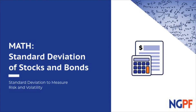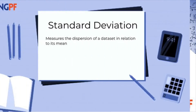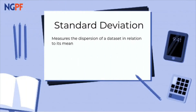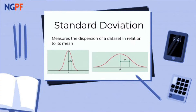It's useful to understand standard deviation because it provides us with a measurement of dispersion, or spread, of a data set in relation to its mean. Low standard deviation means that the data is clustered around the mean, and high standard deviation indicates that the data is more spread out.